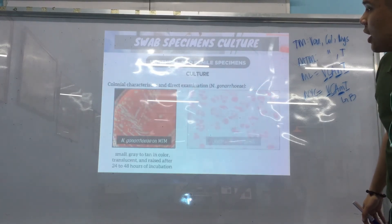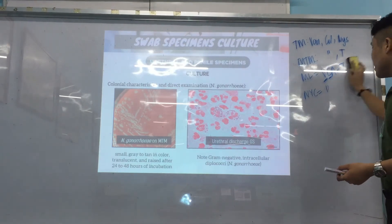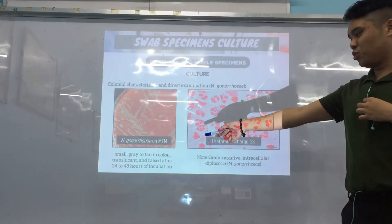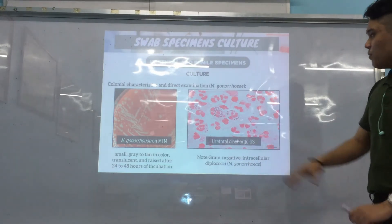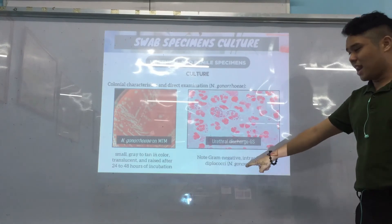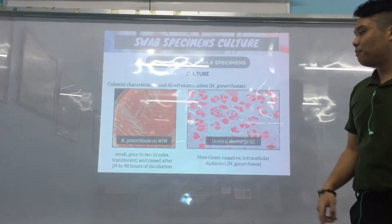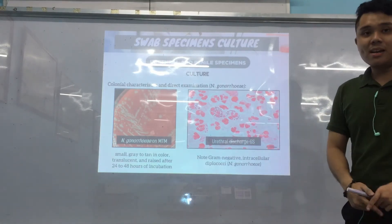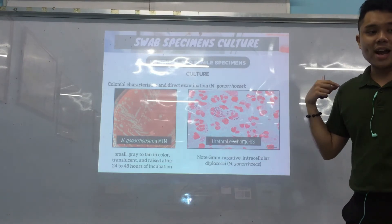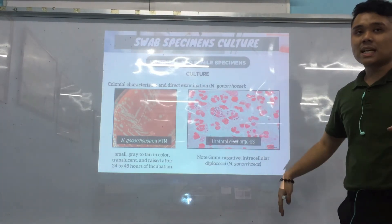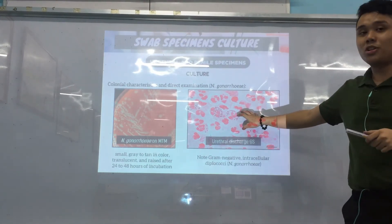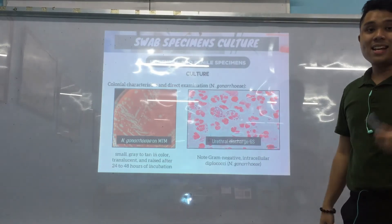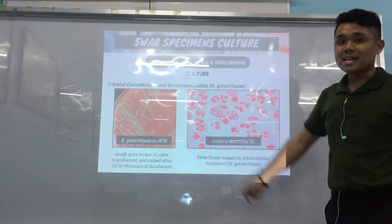For culture characteristics: N. gonorrhoeae on chocolate agar produces small, gray to tan-colored, translucent, raised colonies. On Gram stain of urethral discharge, expect Gram-negative intracellular diplococci with many polymorphonuclear leukocytes (PMNs). For male exudates, this Gram stain finding is essentially diagnostic for gonorrhea. For female specimens, we rely on culture rather than Gram stain, because many Neisseria species that are normal flora show the same morphology.